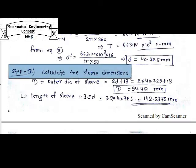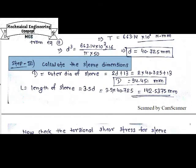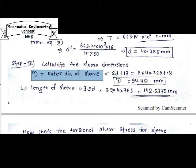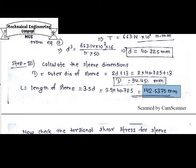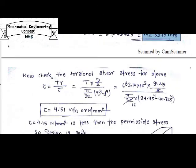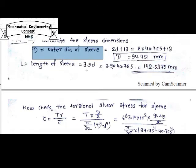After calculating the shaft diameter, in step 3 we design the sleeve by calculating its dimensions. The outer diameter of the sleeve, capital D, is calculated as D = 2d + 13 = 2 × 40.725 + 13 = 94.45 mm. The sleeve length L = 3.5 × d = 3.5 × 40.725 = 142.5375 mm. Now we need to check whether these dimensions are safe enough to bear the load.